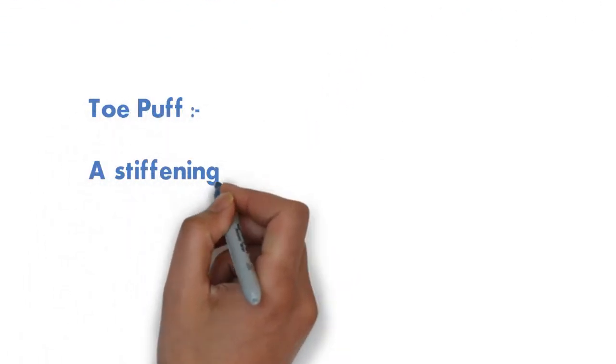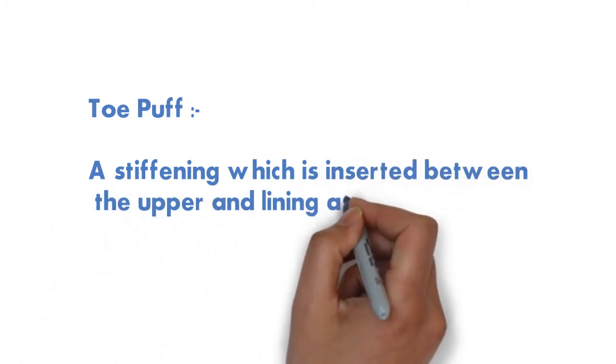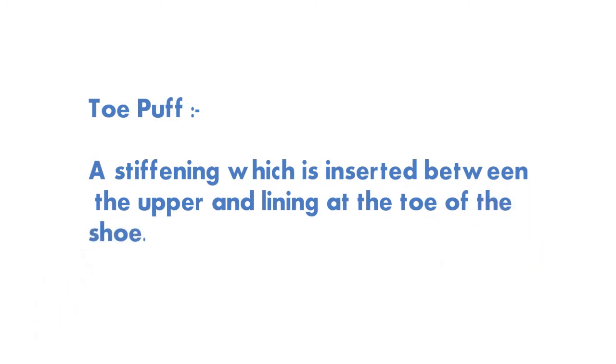Toe puff: a stiffening which is inserted between the upper and the lining at the toe of the shoe.